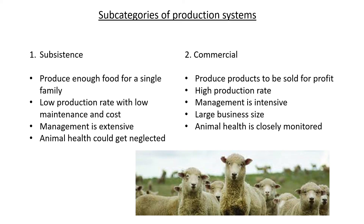For commercial farming, products are sold for profit on a large scale, resulting in a high production rate. Management is intensive — animals are closely monitored, large numbers are housed, and the business operates at a large scale. Animal health is closely monitored, the environment is controlled, and everything is managed for these animals because the purpose is to make money for the business.